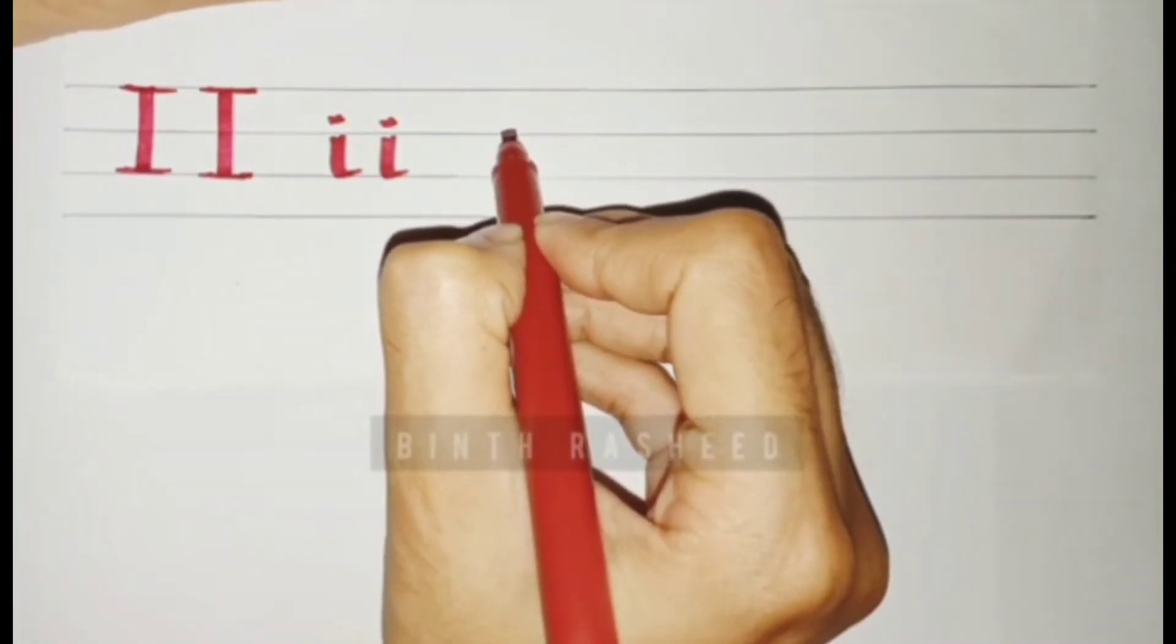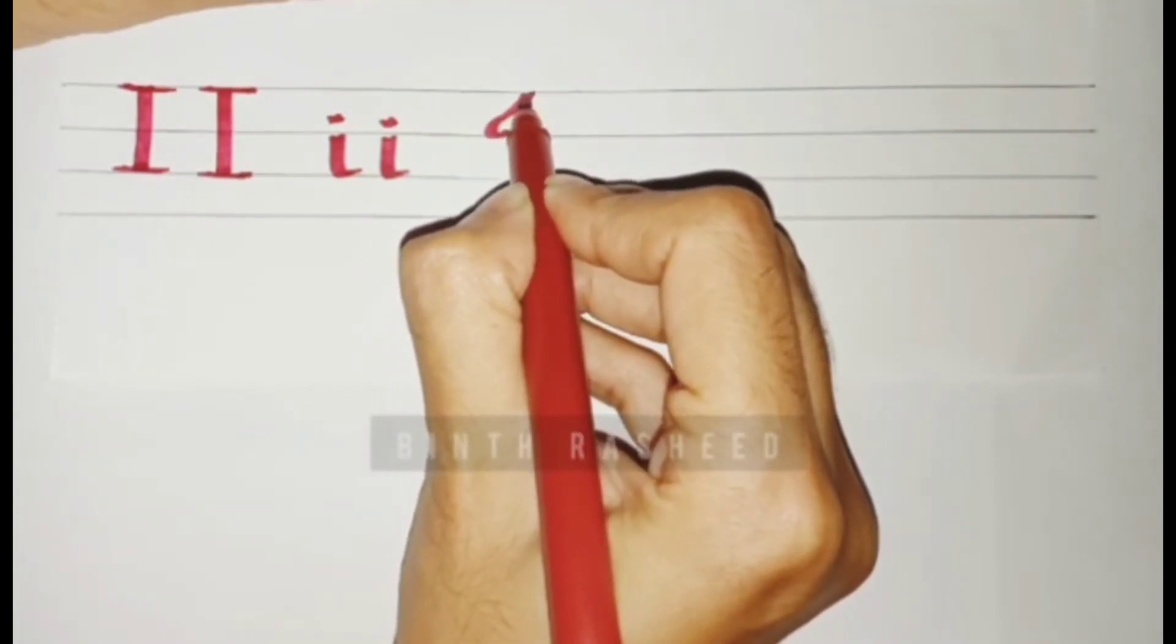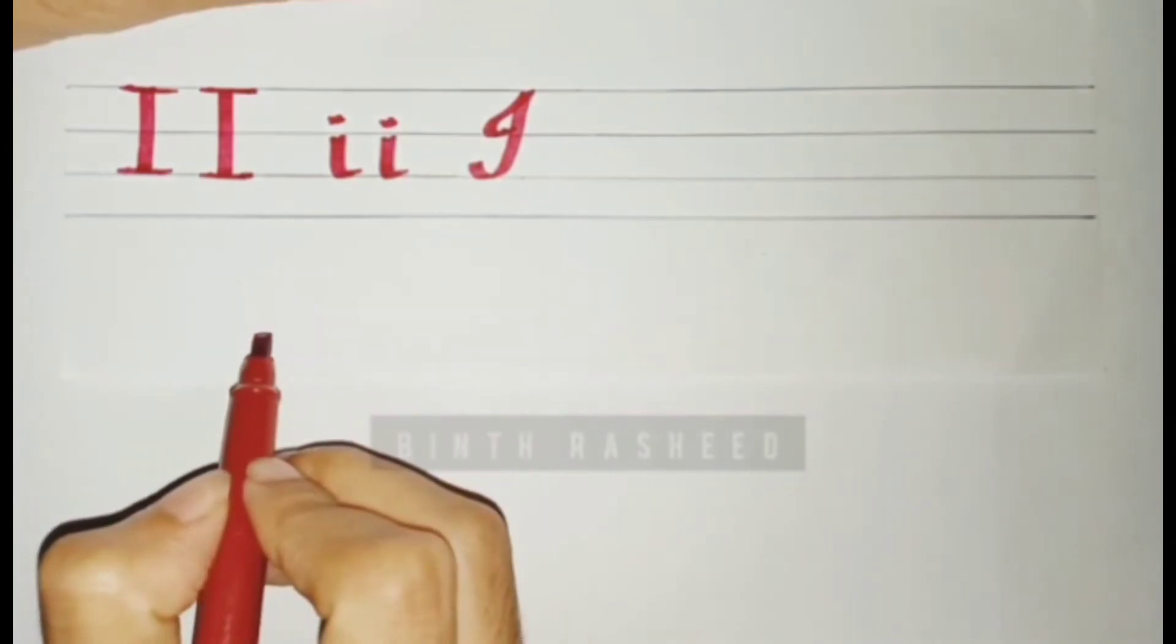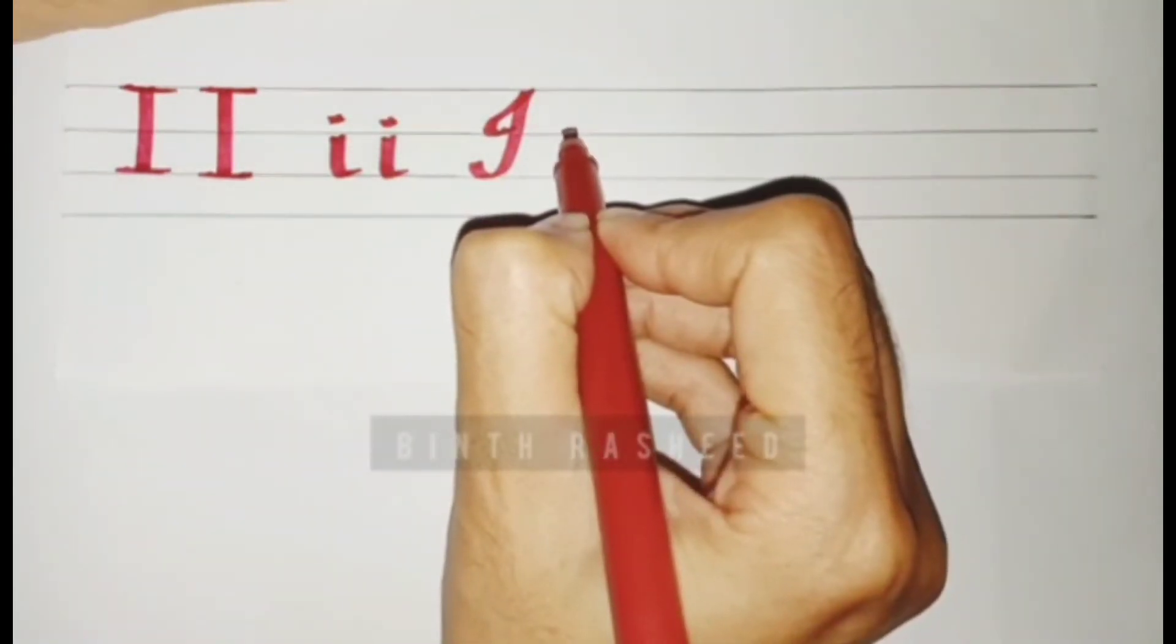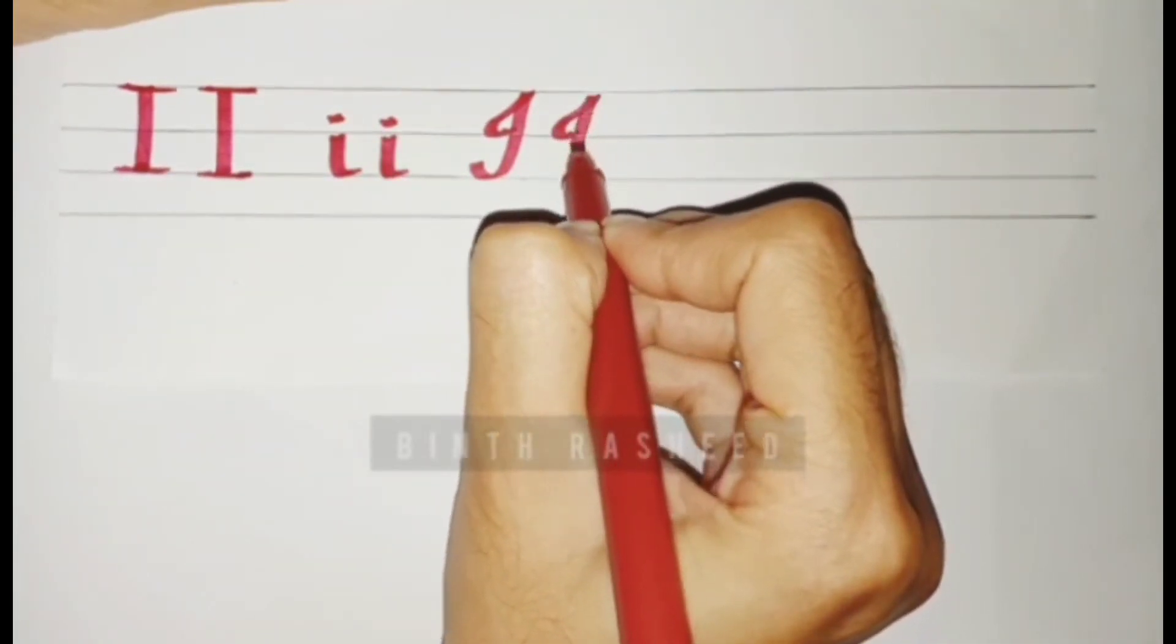Moving into cursive capital I, to write cursive capital I you start from the second line and go to the top, then come downwards and end in a curl, this way. Again, from the second line move to the top and then come downwards slanting and the curl. So that is cursive capital I.